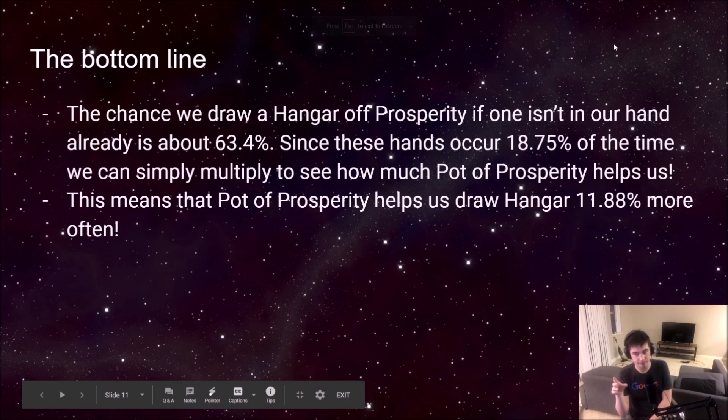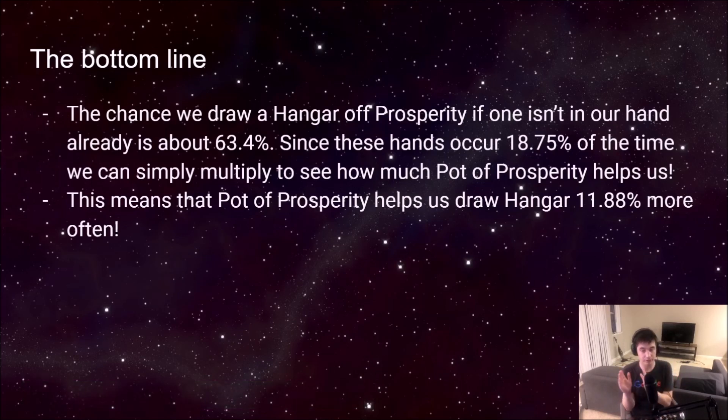The chance we draw a hanger off of Prosperity, if we don't already have a hanger in our hand, is 63.4%. Again, you can find that using a hypergeometric calculator. Since these hands occur 18.75% of the time, and that's where we draw Prosperity without the hanger, that's where Prosperity is gonna put in the work and give us the hangers that we wouldn't have got otherwise. If we multiply these two numbers together, we will find the number of hands in total that Pot of Prosperity helps us draw Hanger. And that is 11.88%. So Pot of Prosperity is gonna help us draw Hanger 11.88% more of the time than if we didn't have it in the deck. That's pretty good. That's a 12% increase.